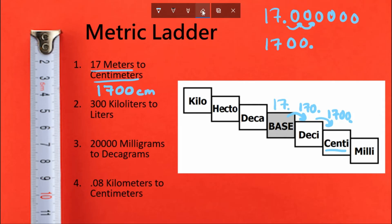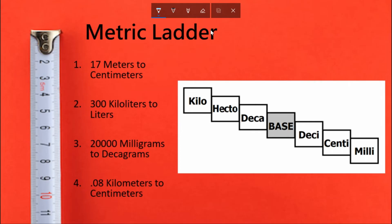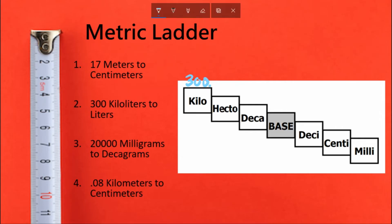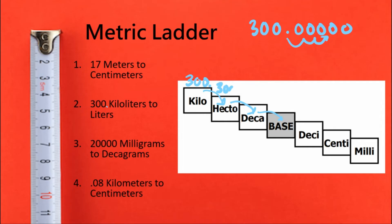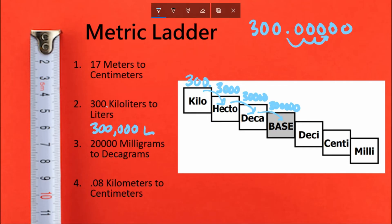Problem number two — this is a good point to pause and try it yourself. We have 300 kiloliters and we need to change that to liters. Since liters is the base, we go three steps down and move the decimal point three places to the right. We have an endless supply of zeros, so moving three spots gives us five zeros after the 3. Our answer is 300,000 liters (L).